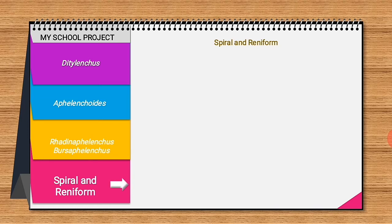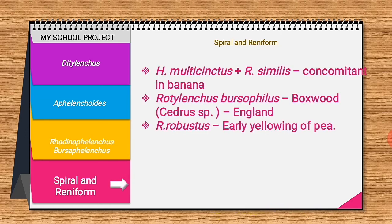Helicotylenchus multicinctus, in combination with Rhadinaphelenchus, causes a concomitant (associated/accompanying) disease in banana — both nematodes together cause severe losses in banana. Rotylenchus buxophilus affects boxwood trees and citrus species in England, and Rotylenchus robustus causes early yellowing of pea.